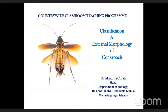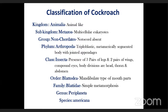We are all so familiar with cockroach because it is seen in our homes. The classification of cockroach begins with Kingdom Animalia, since it is animal-like, sub-Kingdom Metazoa, multicellular eukaryotes, and group Non-Chordata because notochord is absent.